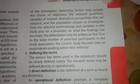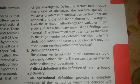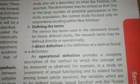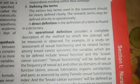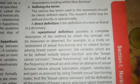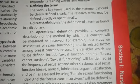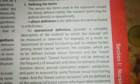The next step is setting delimitations — setting the boundary for the study. The following step is defining the terms, where we use all terms properly and clearly defined. This definition includes a direct definition and an operational definition. We have a dictionary meaning for the direct definition. The operational definition is a complete description of the method by which the concept will be measured or observed.